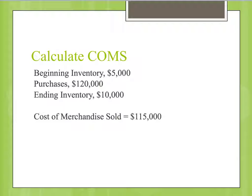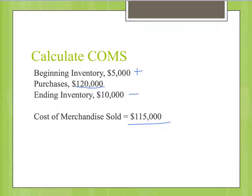Let's take a look at an example. We're going to calculate the cost of goods sold. Our beginning inventory is $5,000, our purchases are $120,000, and our ending inventory is $10,000. We take beginning inventory plus purchases minus ending inventory: $5,000 + $120,000 − $10,000 gives us $115,000.